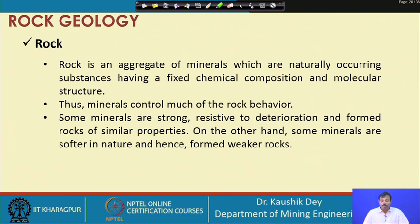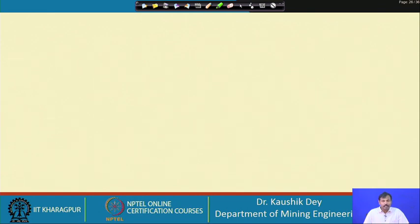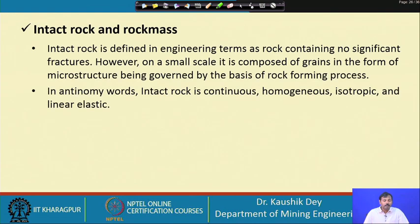Some minerals are strongly resistant to deterioration and form rocks with similarly strong properties, while other minerals are softer in nature and form rocks with weaker properties. Different rocks therefore have different compositions, and variations in composition cause variations in properties. There is an important distinction between rock and rock mass that is critical for rock excavation purposes.